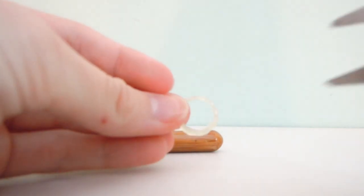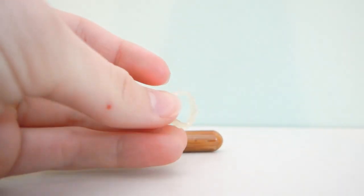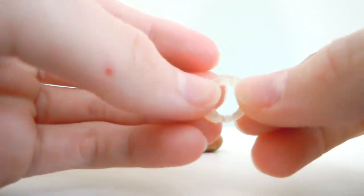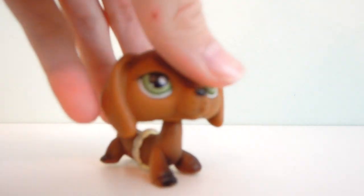Then cut a slit on one side. It should look like a broken ring. Next, you fit it around the LPS you want to have wings.